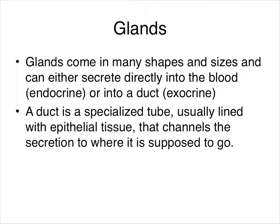A paracrine secretion is where cells secrete something that affects nearby cells. Usually, paracrine-secreting cells are not part of a formalized gland — they are just cells next to other cells that secrete things with no specialized structure. Endocrine glands will be discussed specifically in the endocrine section; we are going to talk more extensively about exocrine glands here.